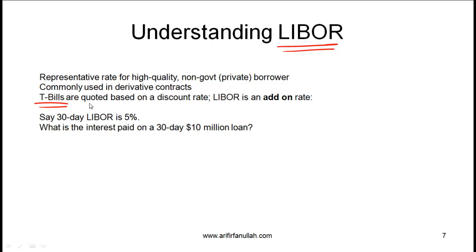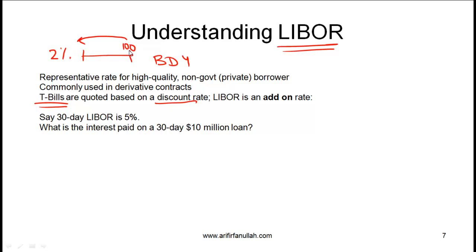A subtle point: when we talked about T-bills, notice that T-bills are quoted based on a discount rate, sometimes called the bank discount yield. Why is it called a bank discount yield? Because if we say the bank discount yield is 2% for a T-bill, that 2% is a discount based on par value. So a bond trading at a 2% discount — taking this as an annual bond — means the bond is currently at 98, which is a 2% discount from 100. That's why this is called a discount basis yield, but LIBOR is an add-on rate.